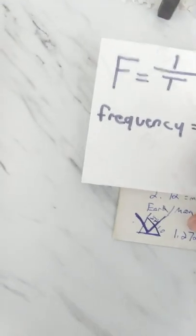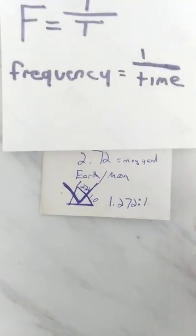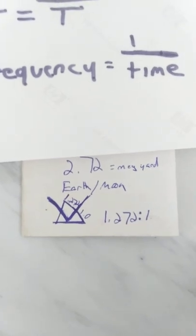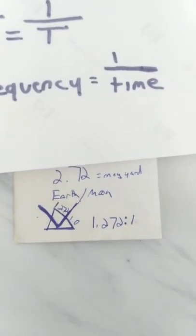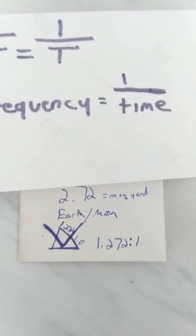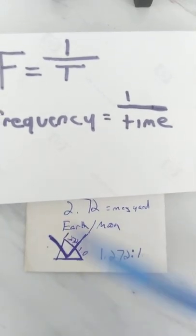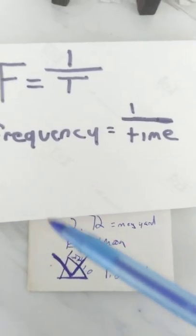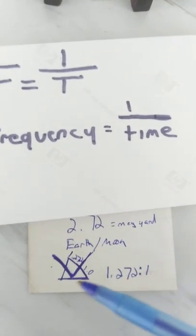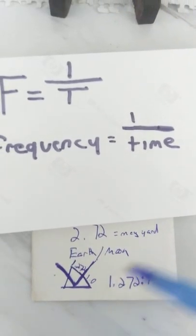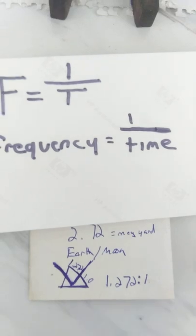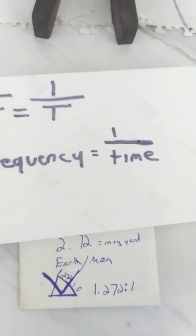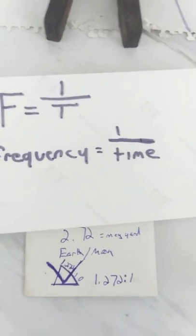What Ed's working off of is the 2.72, or the megalithic yard. What it's doing is showing you the vector in a triangle — the shape of perfect incommensurability.